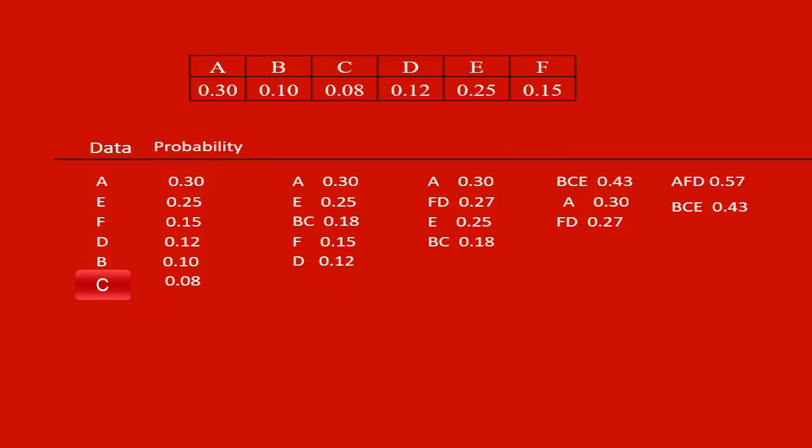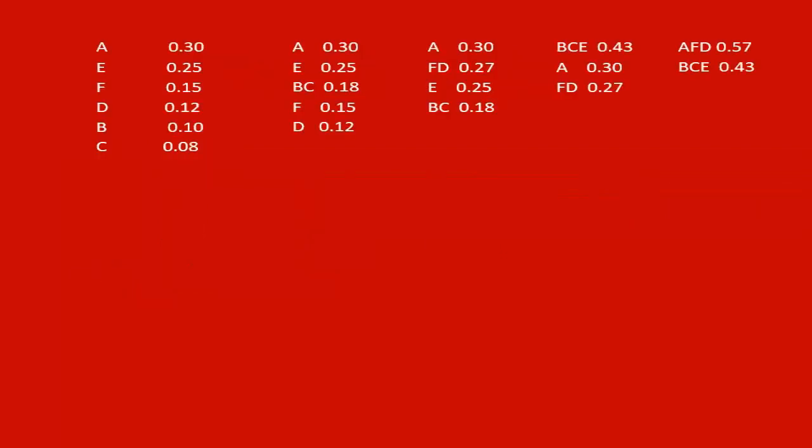Here we have A, F, D and B, C, E are the two groups finally obtained. Now we place the two groups on the top, assigning 0 to higher probability group and 1 to lesser probability group. We proceed downwards in the same manner till we reach the single source data.